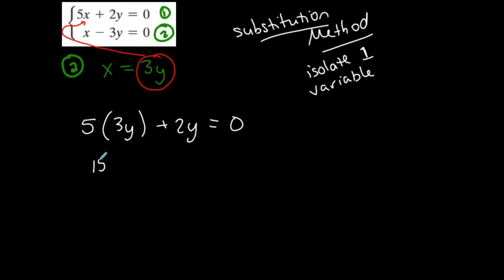And then simplify. 15y plus 2y is equal to 0, or 17y is equal to 0. Divide both sides by 17. Y is 0.